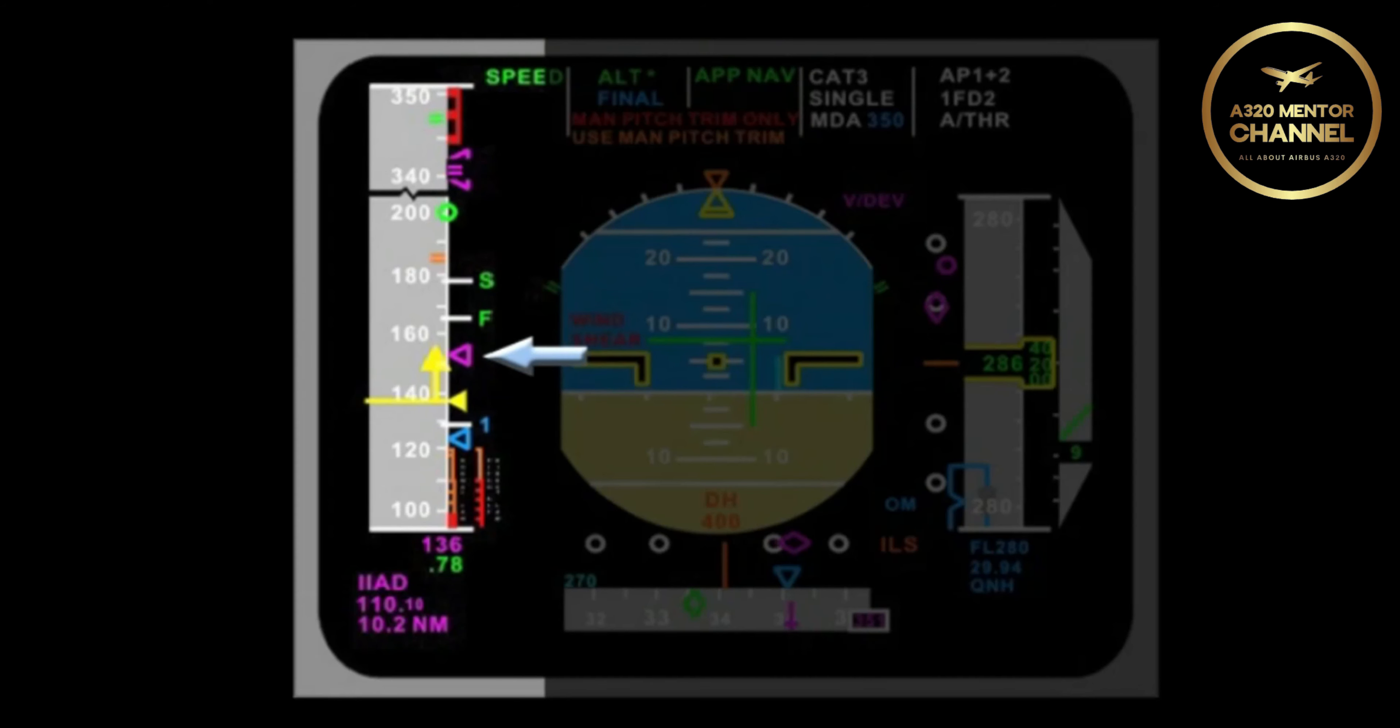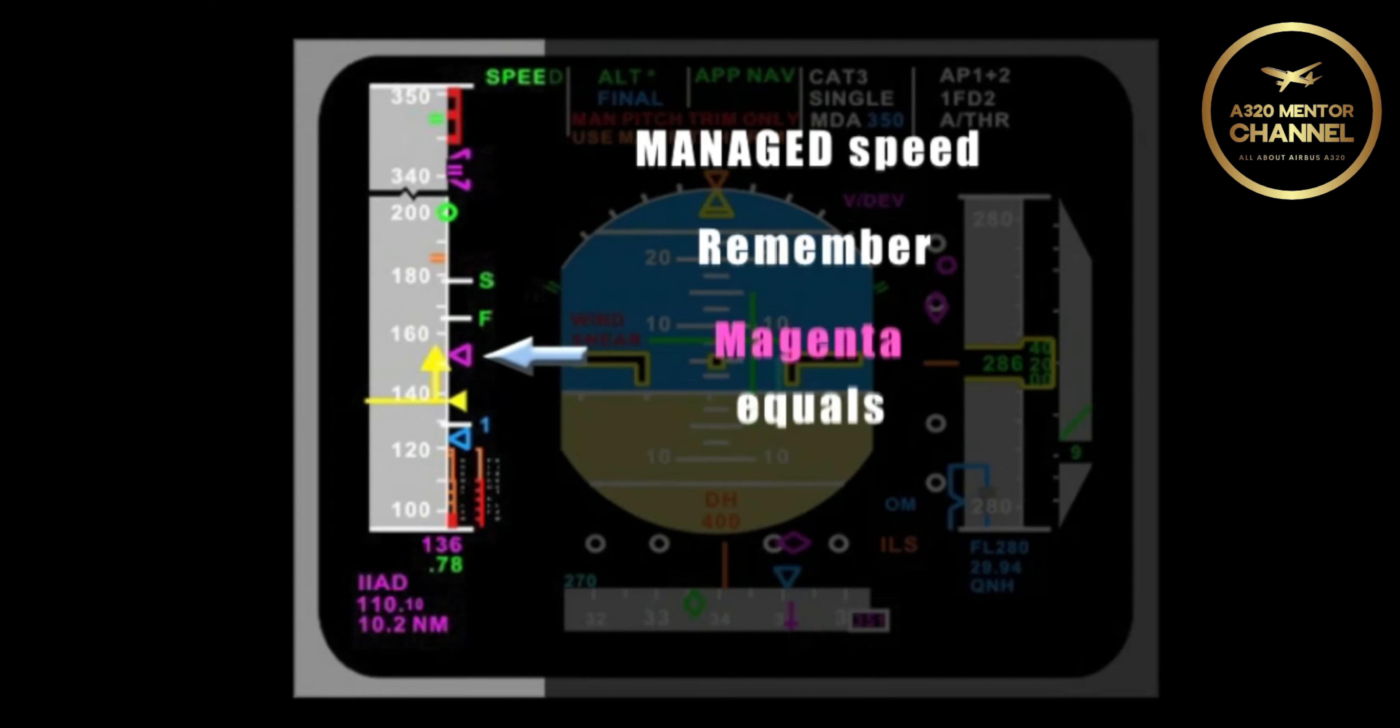We have a magenta speed bug. What type of speed is that? That is managed speed. Magenta equals managed. It is managed speed for the approach. It is a managed speed for any phase of flight, but we regularly see it as managed approach speed.